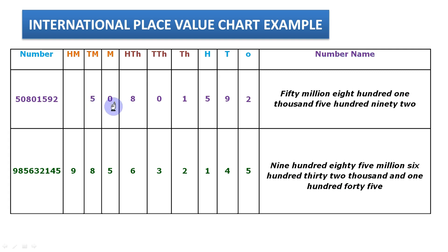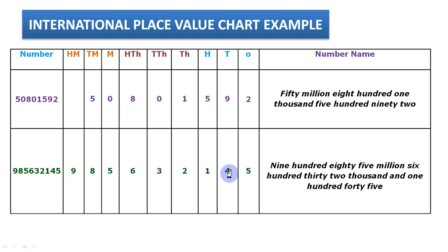All together we can read this number as: fifty million, eight hundred one thousand, five hundred ninety two. In this way we can read large numbers with the help of place values. For the second example, we again write the numbers from the right side in their place values starting from ones. The last digit is 9, which is in the hundred millions place, so the digits 9, 8, 5 belong to the millions period.